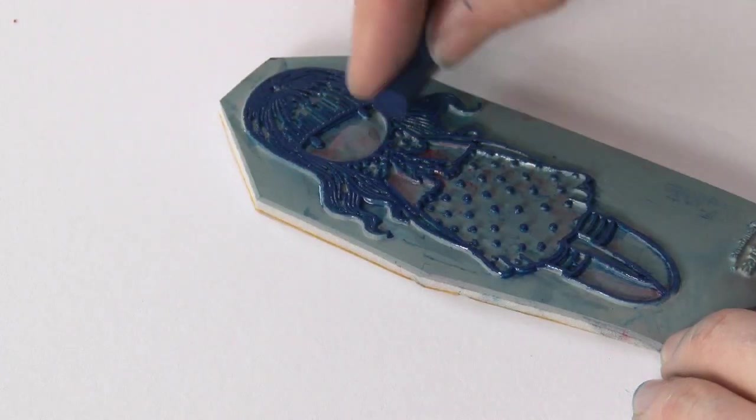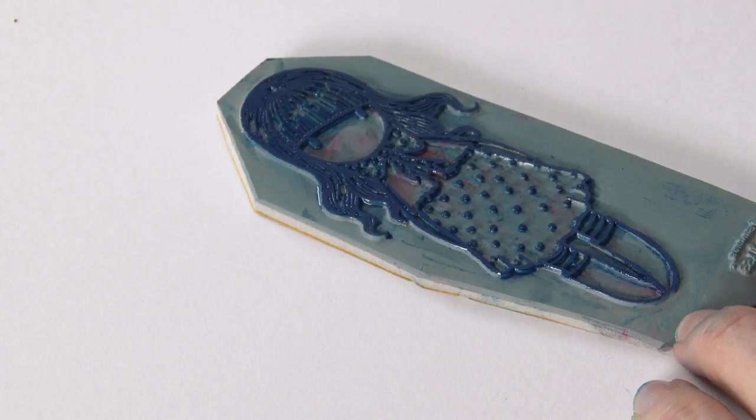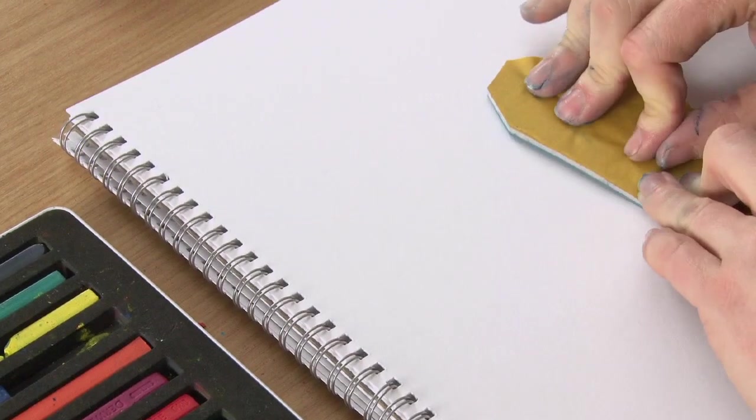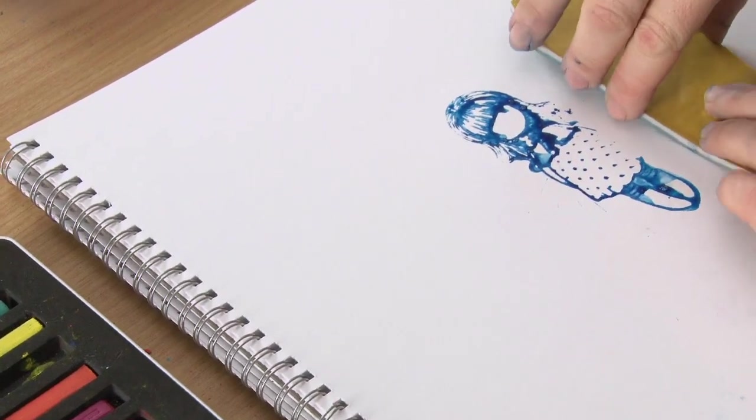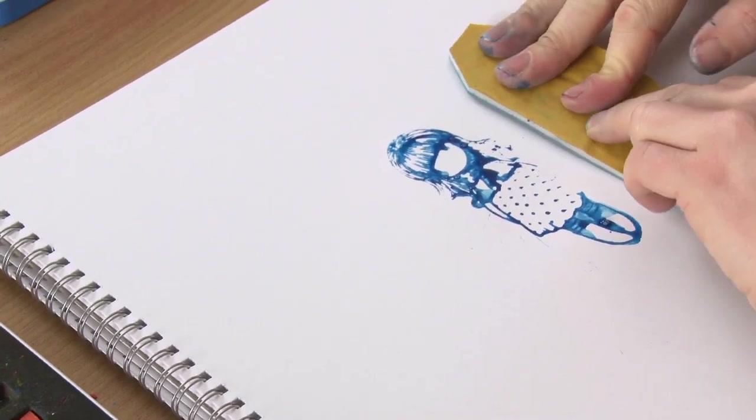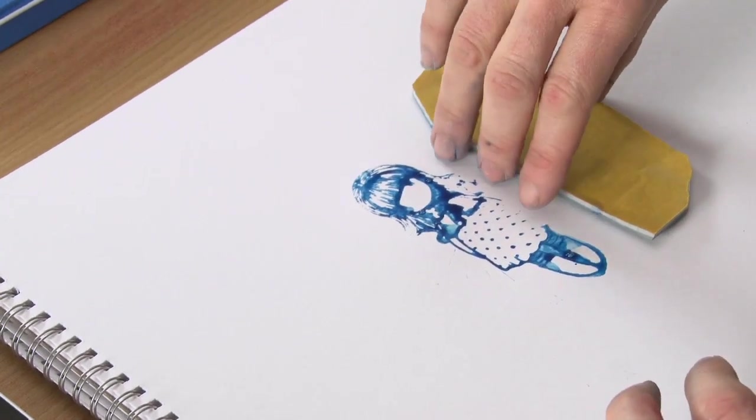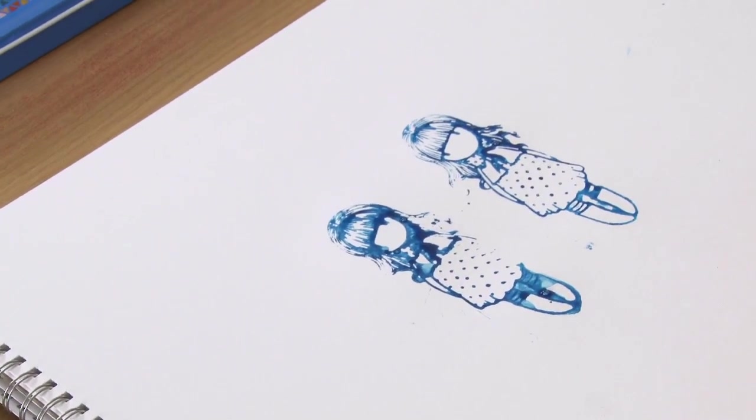Once that's done, I'm going to take the stamp, flip it over and we'll do another one. The first one can always be a bit too much. There she is, looking beautiful.